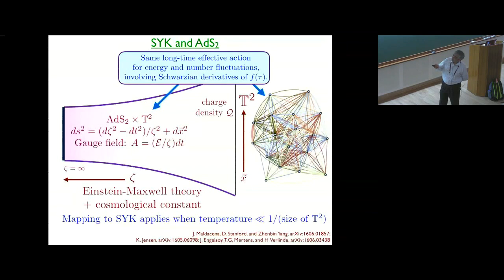For the case of a charged black hole, the Schwarzian has another term which involved another scalar field, which we worked on recently, and that needed to match the number fluctuations on the two sides. And it also works out very nicely.